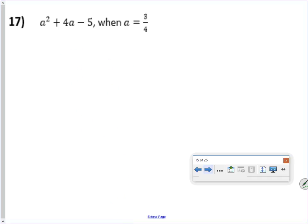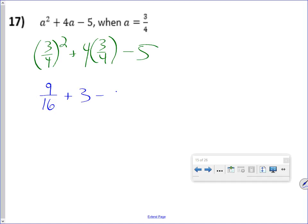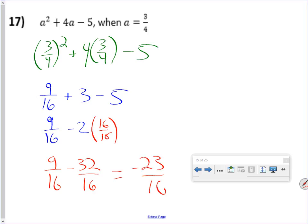All right. For this one, 3 fourths squared plus 4 times 3 fourths minus 5. So this will be 9 over 16 plus 3 minus 5, which is 9 over 16 minus 2. Now for people who want to do this as a fraction, this would be 9 over 16 minus 32 over 16. I'm guessing the majority of you though will use the calculator to do that fraction problem.